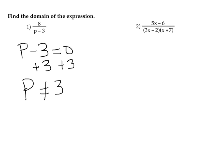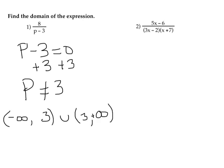So the domain includes all values except p equals three. You can write it as p not equal to three, or using interval notation: the domain goes from negative infinity to three — not including three — union from three to positive infinity. We use parentheses rather than square brackets since three is excluded.